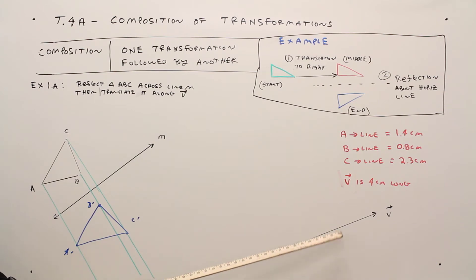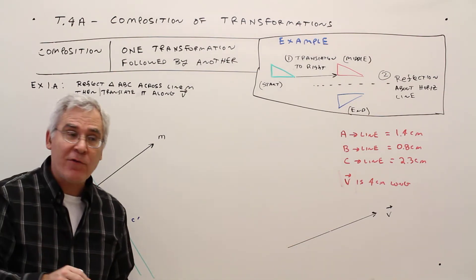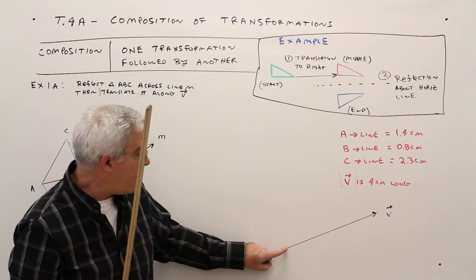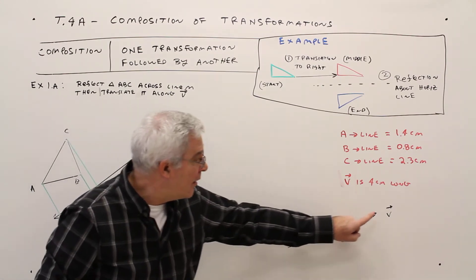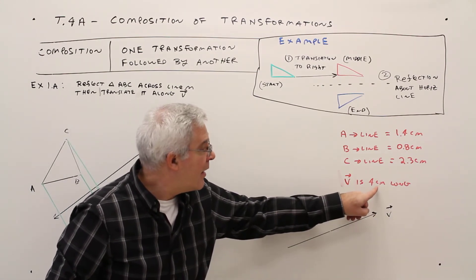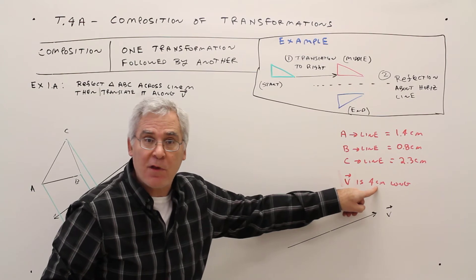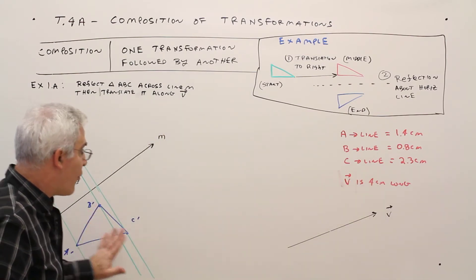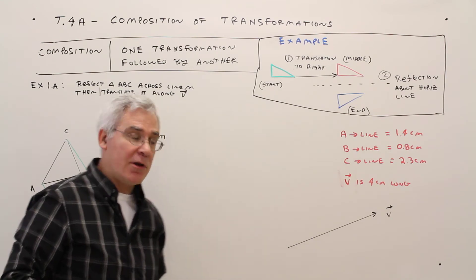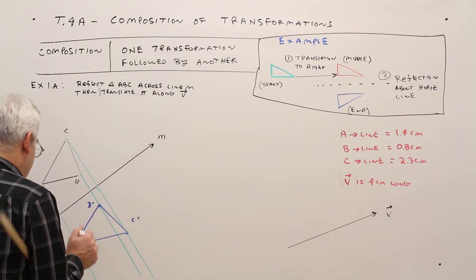Now, I want to do this translation. I've already measured this vector. Again, from the center of the tail to the tip of the arrow. And I got 4.0 centimeters long. So now all I want to do is take this blue triangle and go in this direction, 4.0 centimeters long.